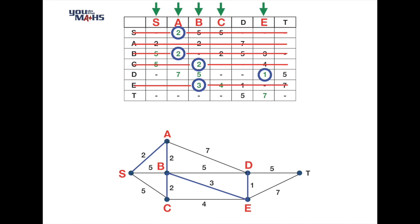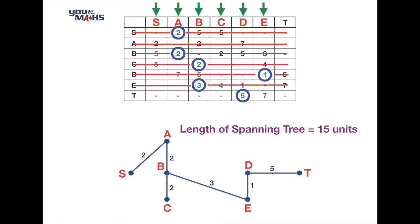We repeat the process: highlight the edge connecting D and E, circle the 1 in the table, cross out row D, and now examine columns S, A, B, C, D, and E. There aren't many numbers left — we're just working out the best way to connect vertex T. The choices are between 5 and 7, so we choose 5 and connect the edge between D and T. We now have our minimal spanning tree. Adding up all the edge lengths gives a total of 15. The tree fits the criteria: no cycles, all vertices connected, with the smallest total length.